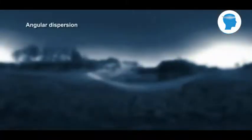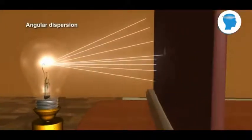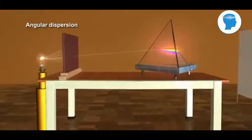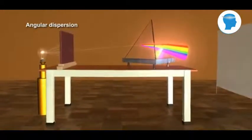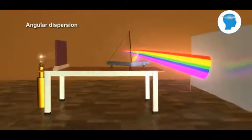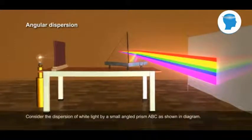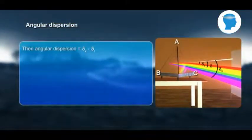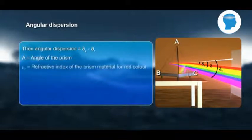Angular dispersion. The angular separation between the two extreme colours, that is violet and red colour, when beam of white light passes through a prism is called angular dispersion. Consider the dispersion of white light by a small angled prism ABC as shown in diagram.